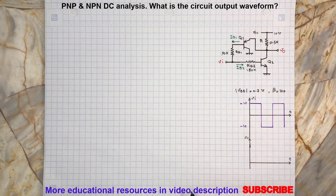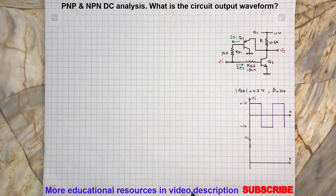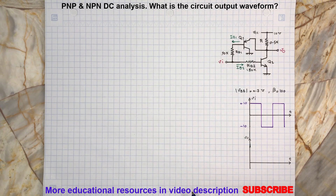As you can see, this circuit consists of one PNP transistor Q1, one NPN transistor Q2, and their biasing resistors. The input is a square wave signal and has two states: positive 10 volt and negative 10 volt. So we can study the circuit per input voltage levels.